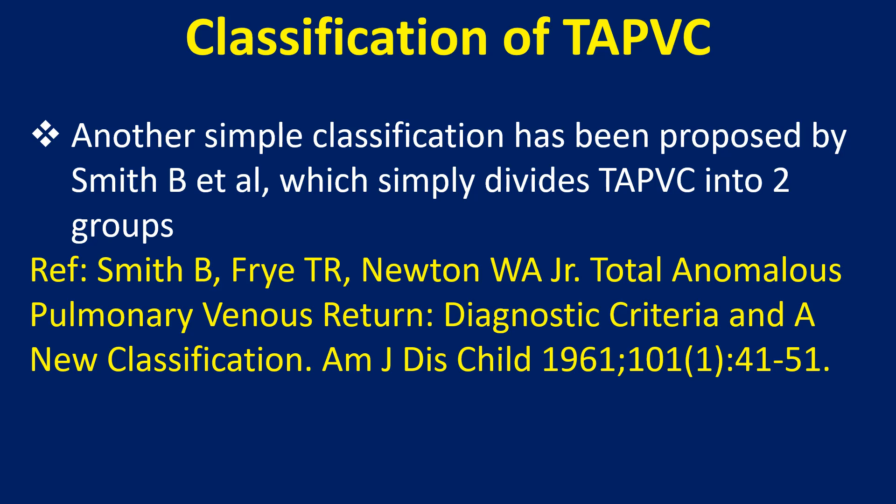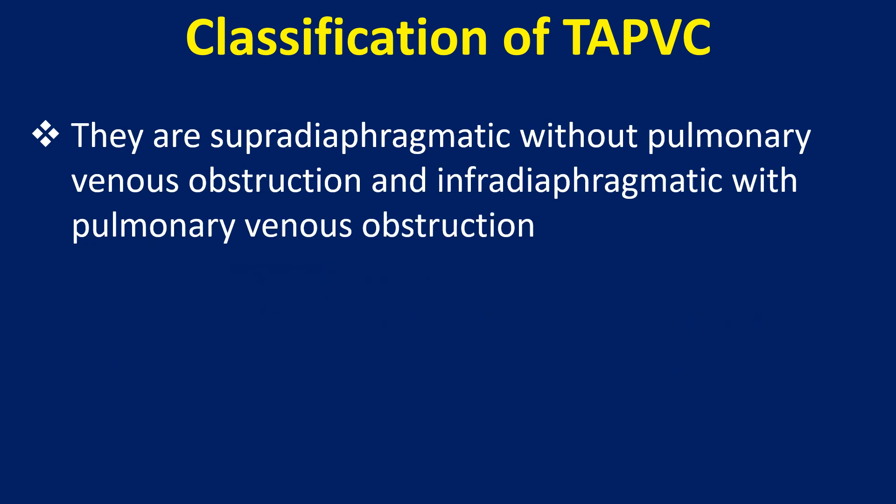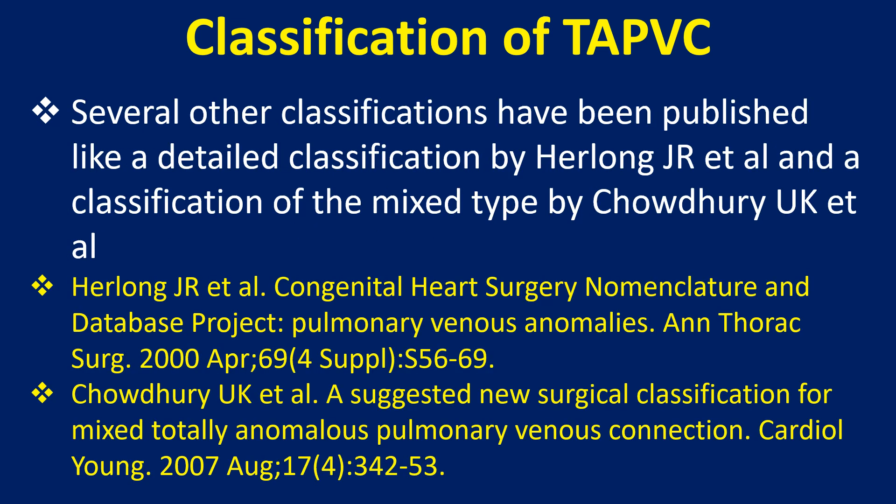Another simple classification has been proposed by Smith and colleagues, which simply divides TAPVC into two groups: supra-diaphragmatic without pulmonary venous obstruction, and infra-diaphragmatic with pulmonary venous obstruction. Several other classifications have been published, like a detailed classification by Herlong and associates, and a classification of the mixed type by Chowdhury and colleagues.